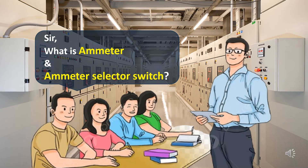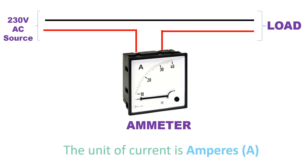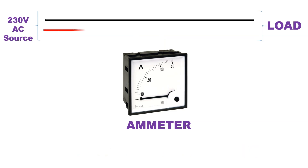What is the ammeter and ammeter selector switch? An ammeter is a device used to measure the flow of electrical current in a circuit. The unit of current is amperes, and the ammeter tells you how many amperes are flowing through a circuit.